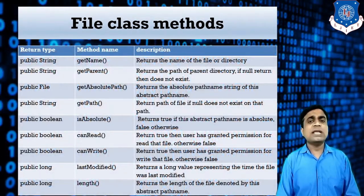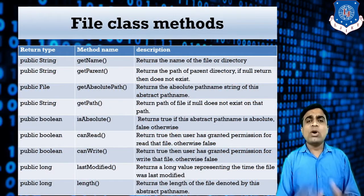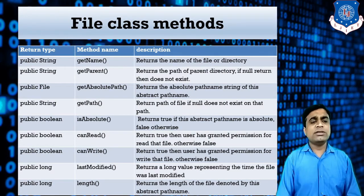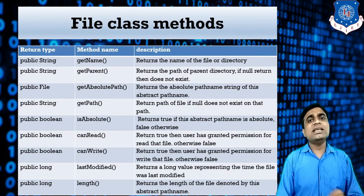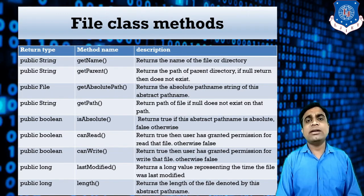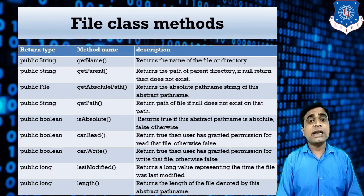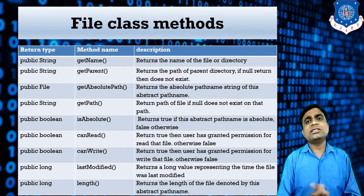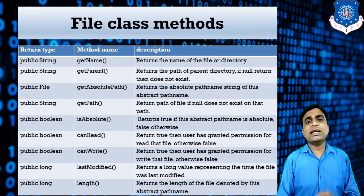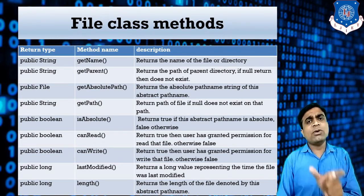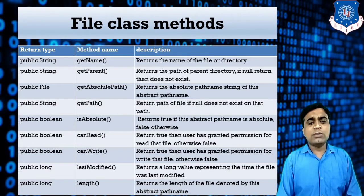Let's look at the different methods available in the File class, which I will also demonstrate with examples. The first method is getName(), which gets the name of the file. Then getParent() returns the path of the parent directory, or null if no parent directory exists. getAbsolutePath() returns the full exact path including the drive and folder hierarchy. getPath() returns only the filename and its relative path.